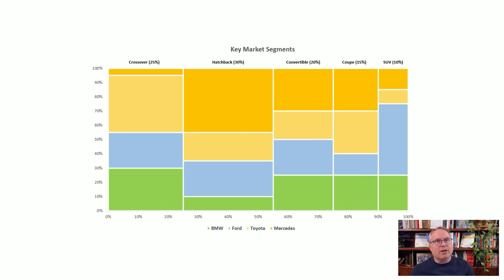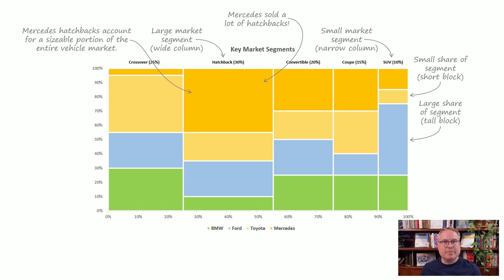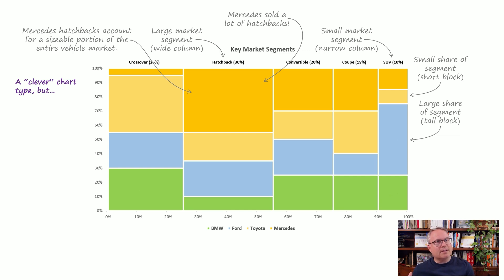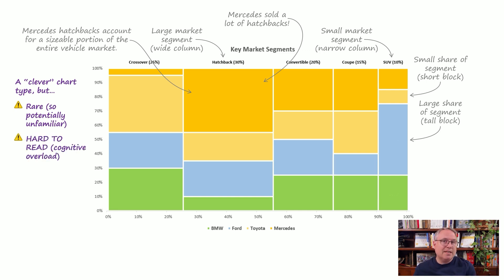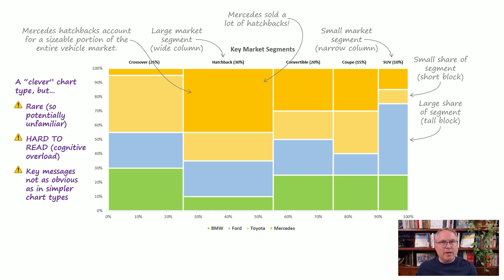Fans of Marimekko charts might argue that the strength of a Marimekko chart is its versatility — it can communicate all these types of insights within a single chart. And that's true; it's quite a clever chart in that sense. But that cleverness or versatility comes with costs, it comes with trade-offs. It's rare, so the audience might not be able to read it, and they are just harder to read. Even for audiences that are familiar with this chart type, they're going to have to think a lot harder. Because there's so many things going on — the height, the width, the area — key messages are often not as obvious as they would be in simpler chart types.